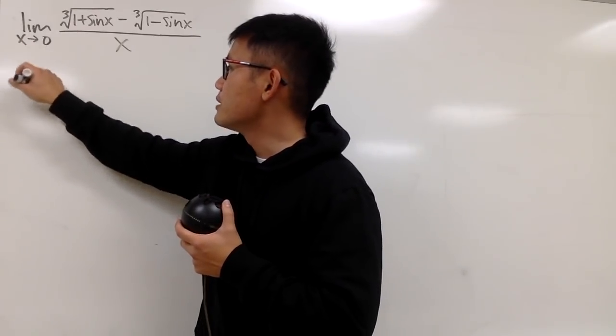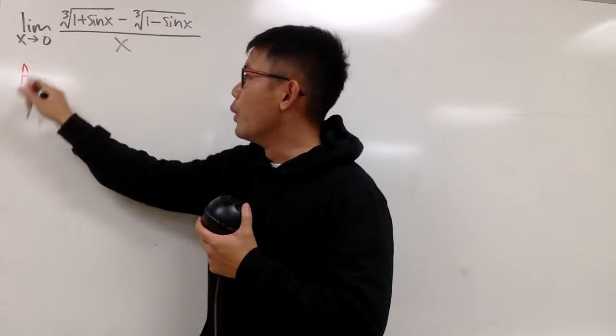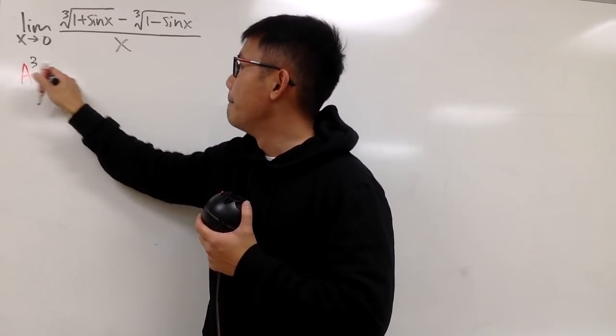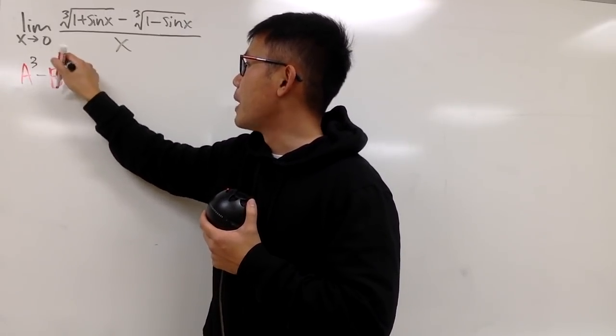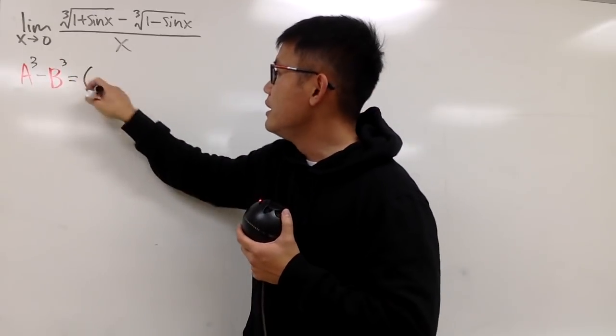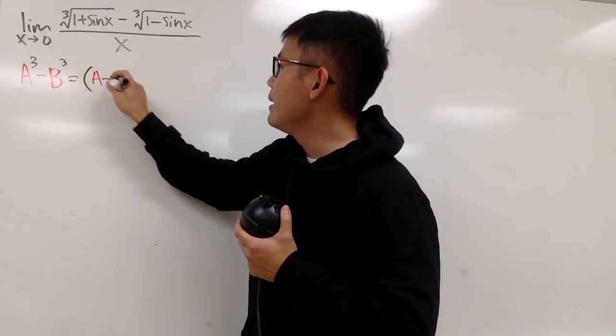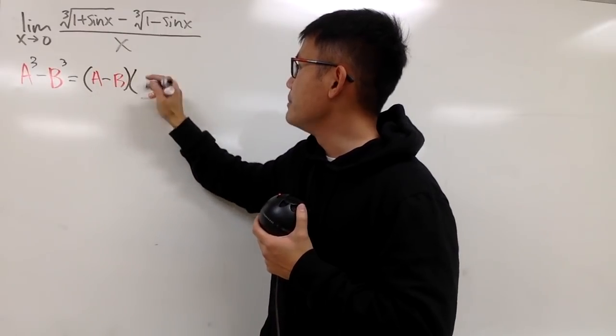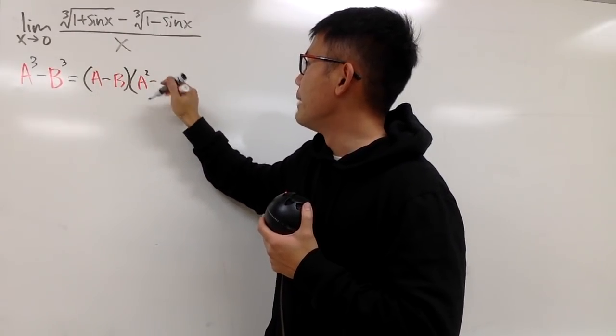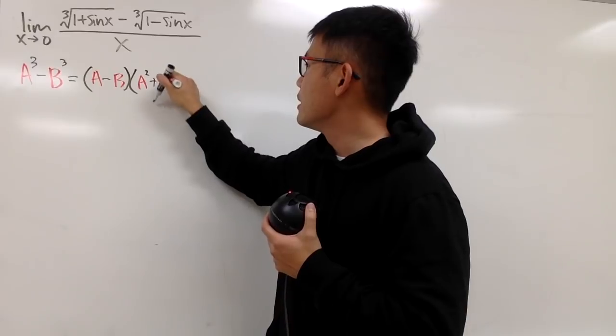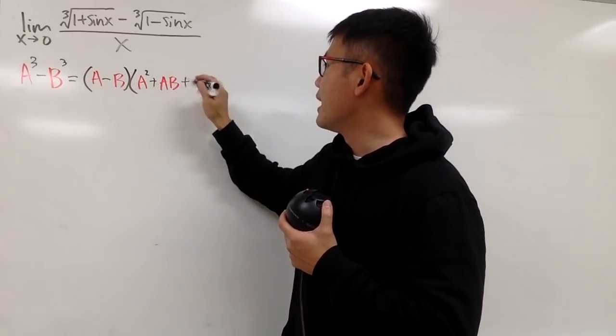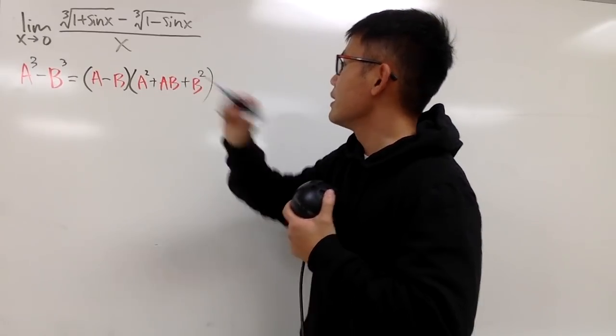Let me remind you guys how to do that. First of all, let's look at the difference of two cubes. When we have a^3 - b^3, we can actually factor this. This is just equal to (a - b) times (a^2 + ab + b^2), like that.